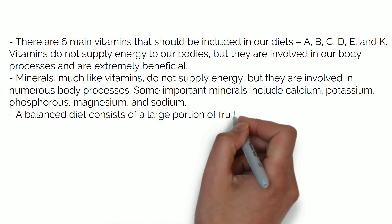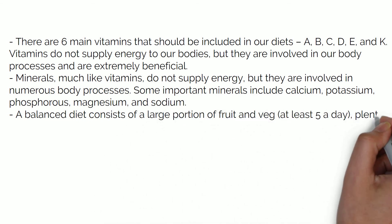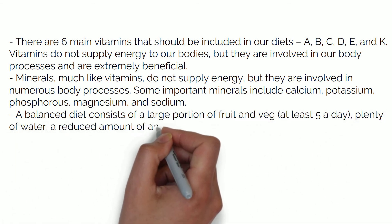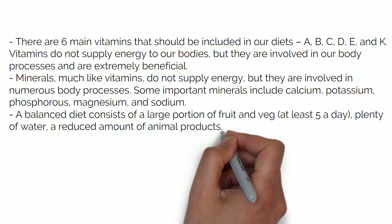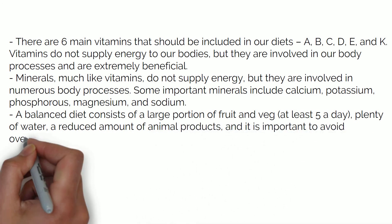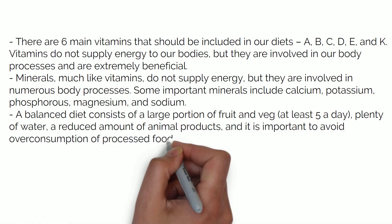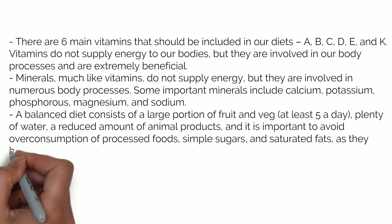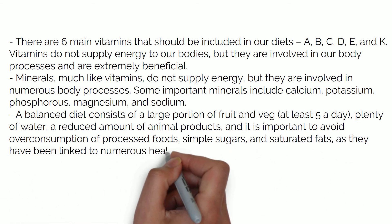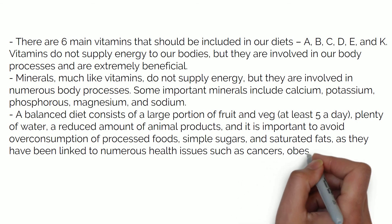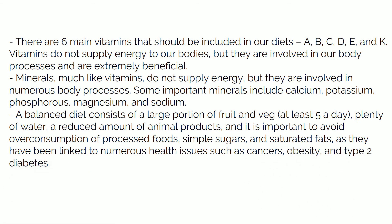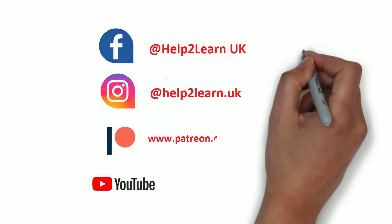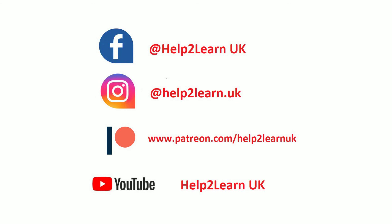A balanced diet consists of a large portion of fruit and veg — at least five a day — plenty of water, a reduced amount of animal products, and it is important to avoid overconsumption of processed foods, simple sugars and saturated fats, as they have been linked to numerous health issues such as cancers, obesity and type 2 diabetes. That was it for today, I hope you've enjoyed it and I'll see you in the next lesson for the human biology course. Bye!